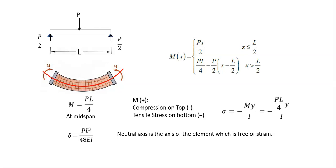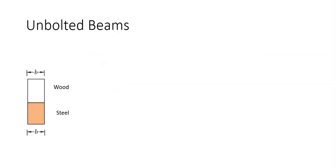E is Young's modulus and I is the moment of inertia of the cross-sectional area.